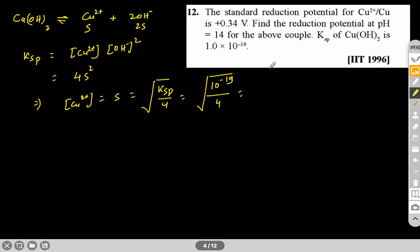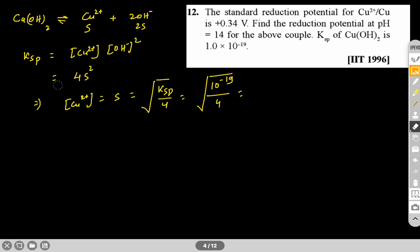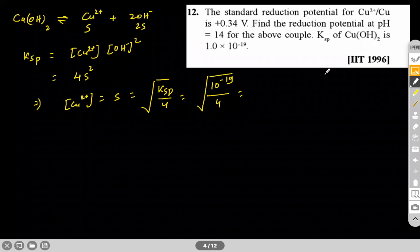One important note: since pH is given as 14, the OH⁻ concentration is already fixed by the solution. We cannot use the solubility expression S = (Ksp/4)^(1/3) because that applies only when there is no common ion. Here, OH⁻ is already present as a common ion, so solubility would differ.